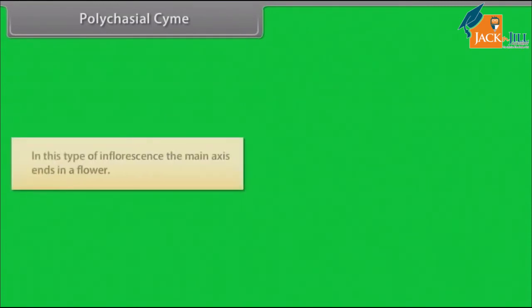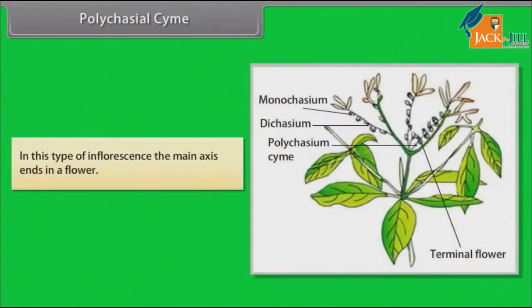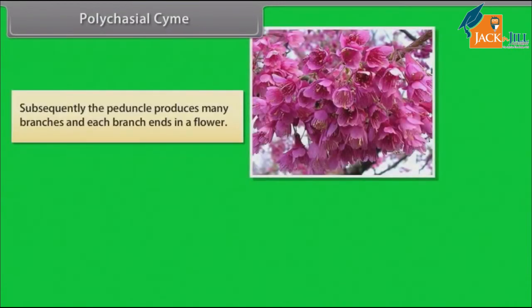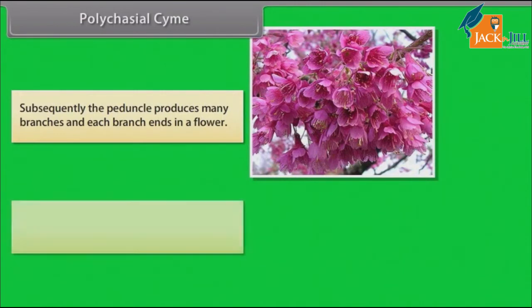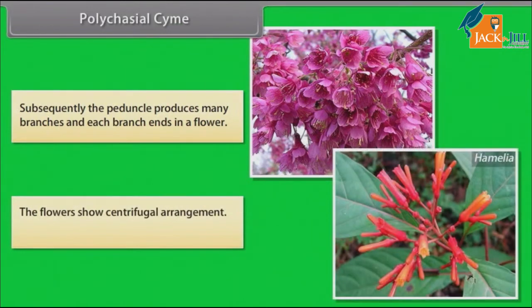In polychasial cyme, the main axis ends in a flower. Subsequently, the peduncle produces many branches and each branch ends in a flower. The flowers show centrifugal arrangement. Example: Hamelia.